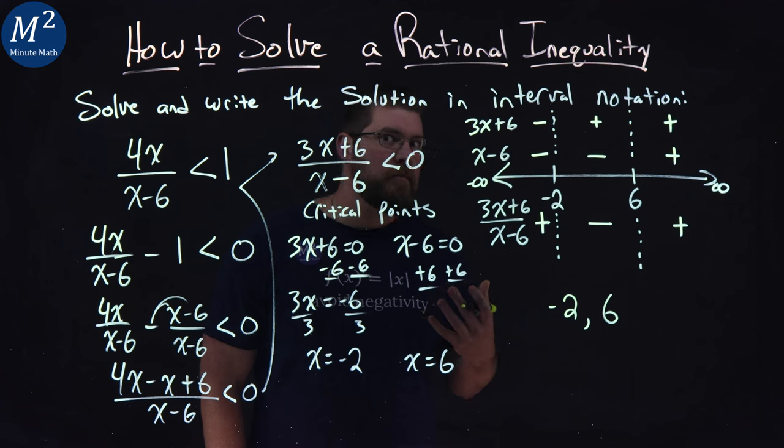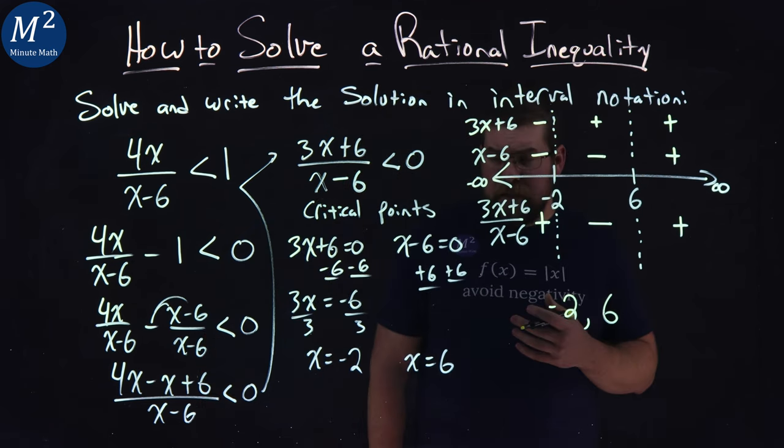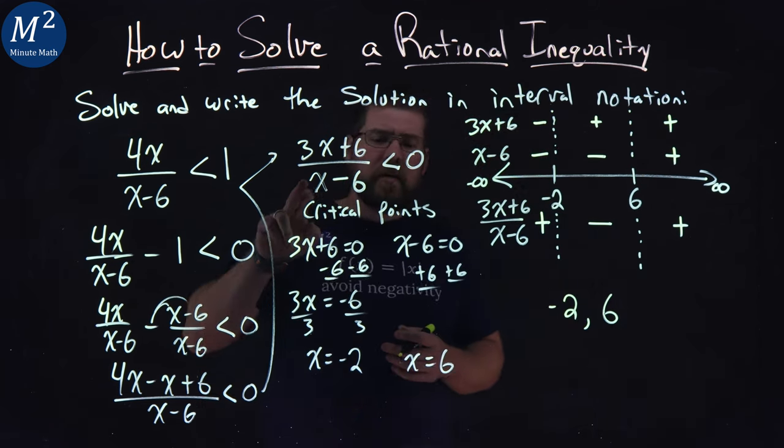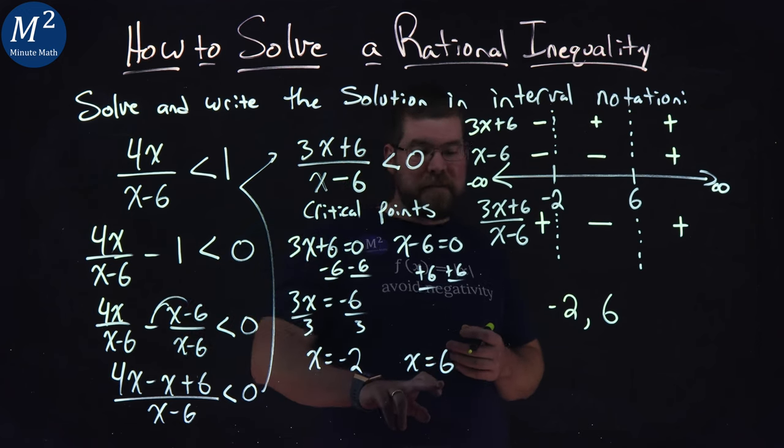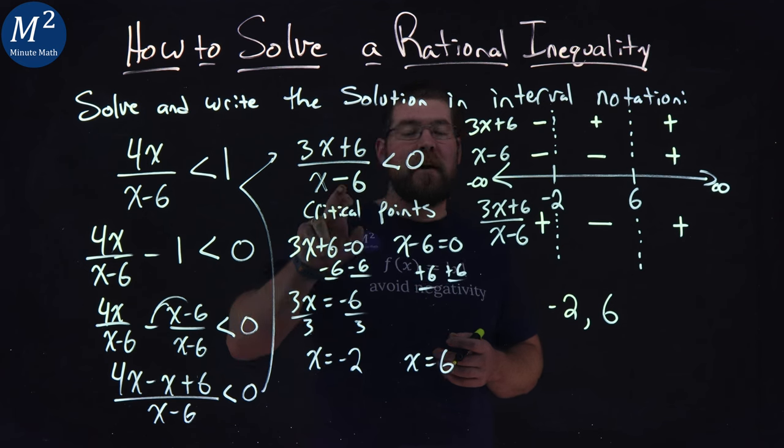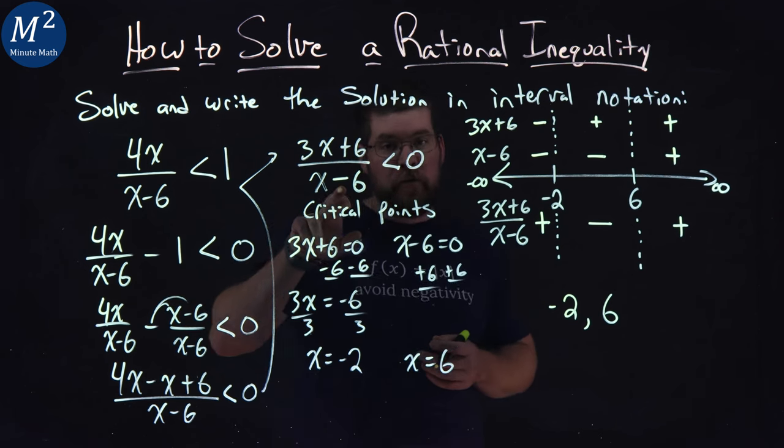So we have negative 2 to positive 6 as the only interval where we're negative. Now we have to determine, can it equal negative 2 or positive 6?